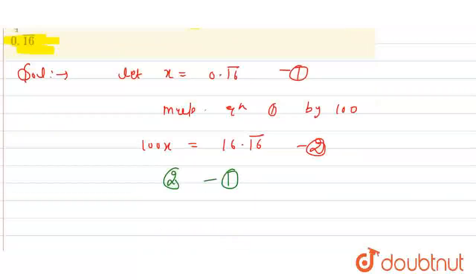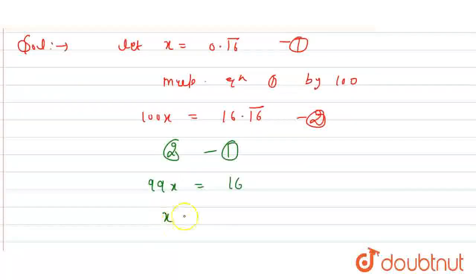So left hand side, we have 99x. And right hand side, we have 16. So clearly, we have x value, which is 16 upon 99. So we can express it in the form of p by q.